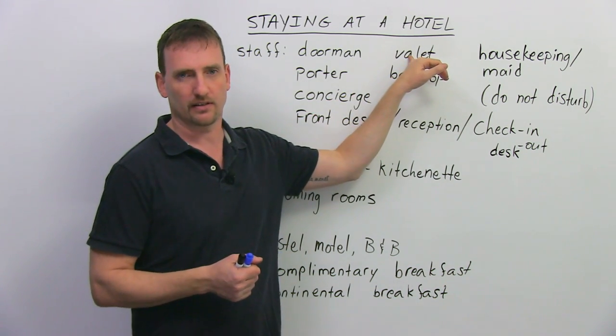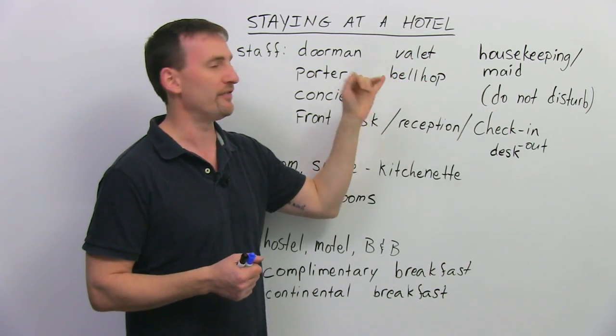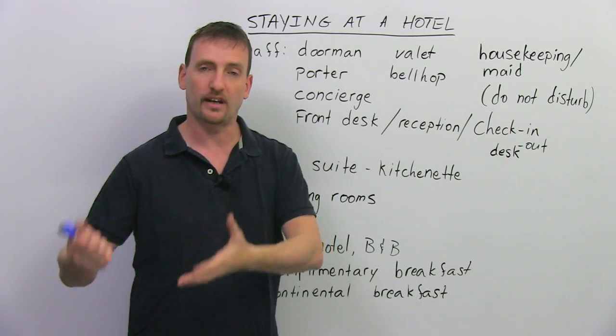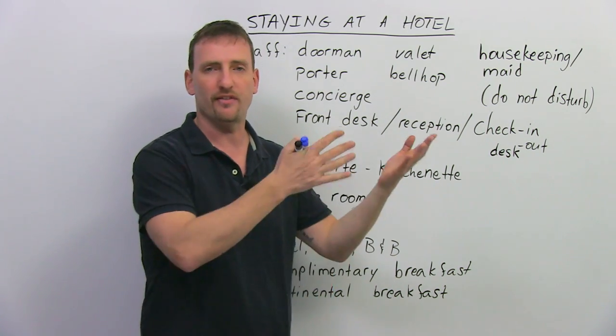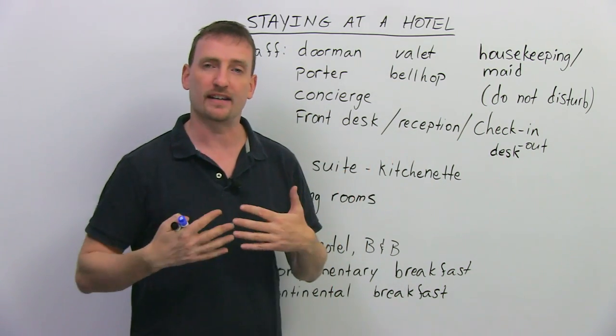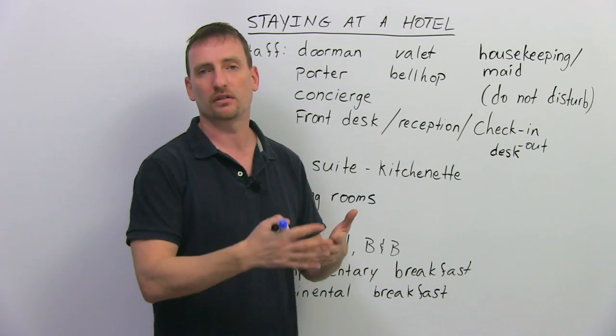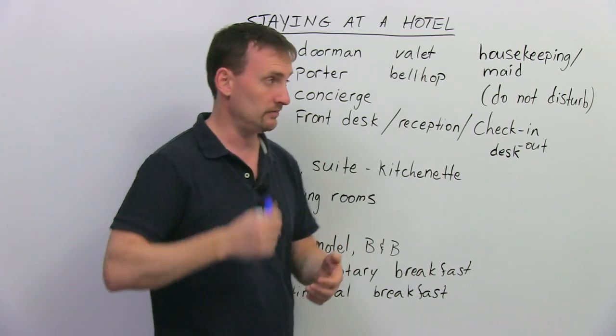If you drove there, there might be a valet. A valet is a person who will take your car and park it for you. You give him or her the keys, they drive away, park your car. When you're ready to leave, they bring your car to the front of the hotel, you get in, drive off.